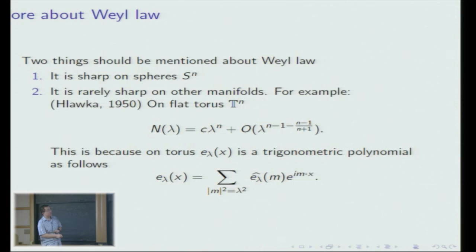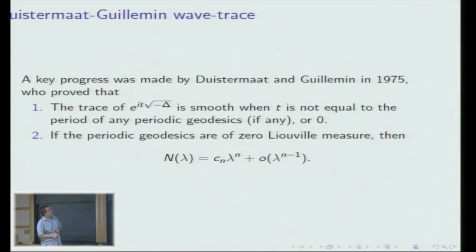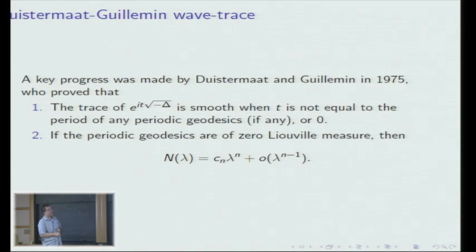This leaves an interesting question: on which manifolds can we improve the Weyl formula? A key progress was made by Duistermaat and Guillemin in 1975, in which they proved the so-called Duistermaat-Guillemin wave trace formula. Basically speaking, the trace of the half-wave operator is smooth when t is not equal to the period of any periodic geodesic. A natural corollary is that if the periodic geodesics are of measure zero on the spherical bundle on the manifold — considering not just the geodesics themselves but also their directions — then we have an improvement from big-O to small-o.